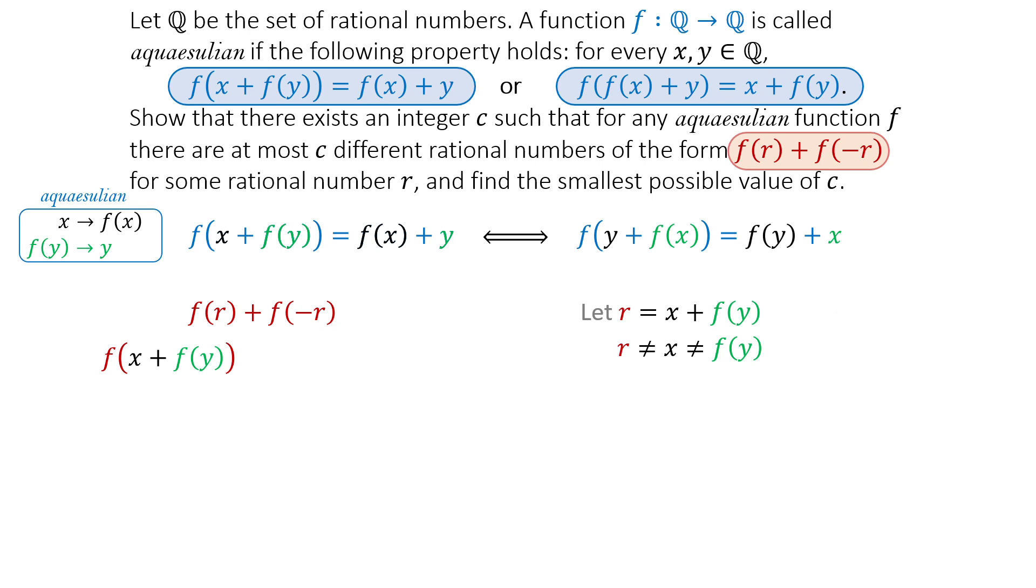Then -r = -x - f(y). Since f satisfies the Aquasoulian property, the first part of the expression can be written as f(x + y).